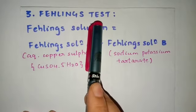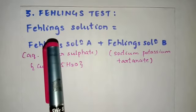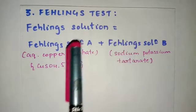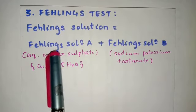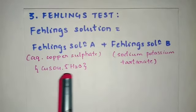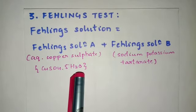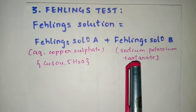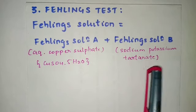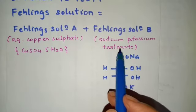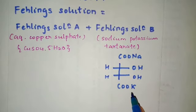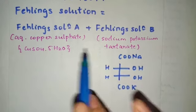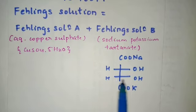The third reaction is Fehling's test. The Fehling's reagent is a solution made up of two components: Fehling solution A and Fehling solution B. Fehling solution A is nothing but aqueous copper sulfate — CuSO₄·5H₂O. Fehling solution B is sodium potassium tartrate, formed from tartaric acid. In tartaric acid, if we replace the H atoms with Na and K, we get sodium potassium tartrate. Your copper sulfate solution will be blue in color.